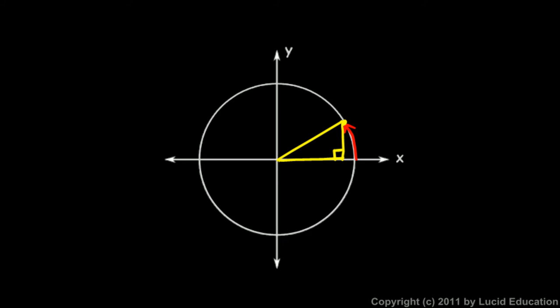I could also do this for an angle larger than 90 degrees. If I rotate around here into the third quadrant and stop here, I end up at some point that has x and y coordinates.